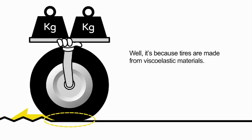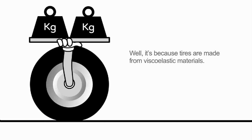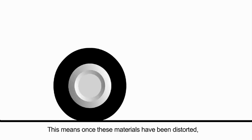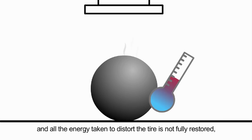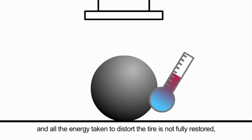Well, it's because tires are made from viscoelastic materials. This means, once these materials have been distorted, they regain their shape only after a short period of time, and all the energy taken to distort the tire is not fully restored.